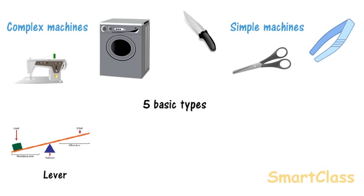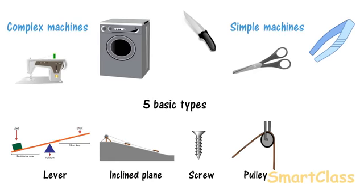These are lever, inclined plane, screw, pulley and wheel and axle. Let us see all of them one by one.